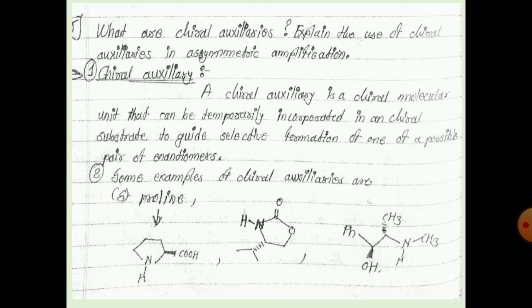Chiral auxiliaries are chiral molecule units that are temporarily incorporated into a chiral substrate to guide the selective formation of one of a possible pair of enantiomers. The first example of a chiral substrate is S-proline.